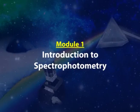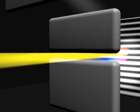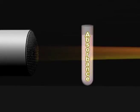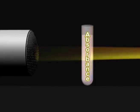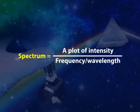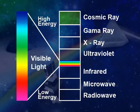Starting with Module 1, Introduction to Spectrophotometry. The spectrophotometer measures the quantity of light passing through a solution. The amount of light absorbed by the solution is directly proportional to the concentration of absorbing species in solution. More concentrated solutions transmit less light and so absorb more light than dilute solutions. The amount of light absorbed at a particular wavelength depends on both the concentration of the species and the nature of the molecule itself. Spectrum is a plot of intensity versus frequency or wavelength. Ultraviolet and visible radiation comprise only a small part of the electromagnetic spectrum, which includes other forms of radiation such as radio, infrared, cosmic, and x-rays.